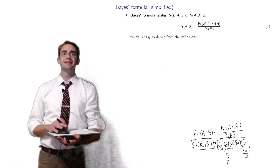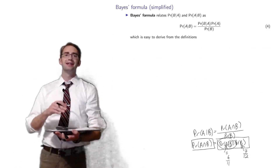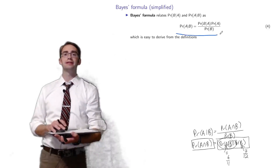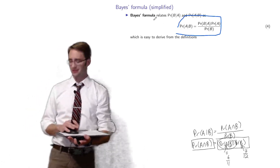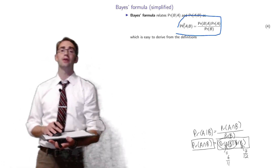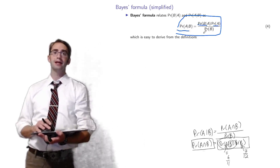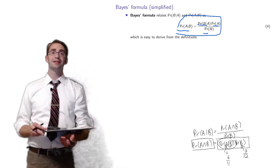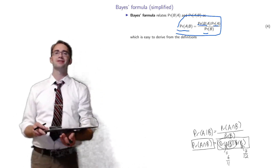Bayes' formula is an important theorem that lets you compute P(A|B) in terms of P(B|A). The equation is: P(A|B) = P(B|A) · P(A) / P(B). This is easy to derive from the definitions — essentially one line of algebra.